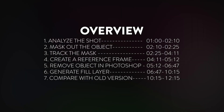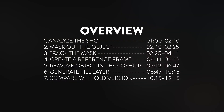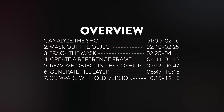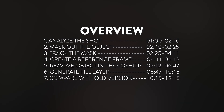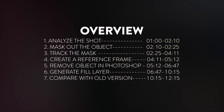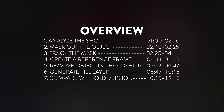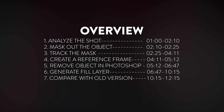The first thing we're gonna do is analyze our shot, then we're gonna mask out our object and track that mask across the entire shot. Then we're gonna create a reference frame, move it to Photoshop, and remove our object inside of Photoshop — so that way After Effects knows what to do when we generate the fill layer. For the last step, we'll take a look at the results and compare it with the older version of Content-Aware Fill.